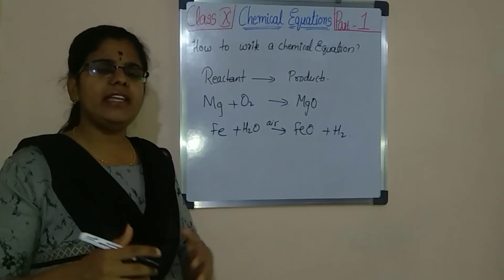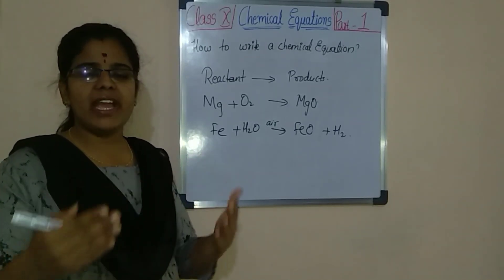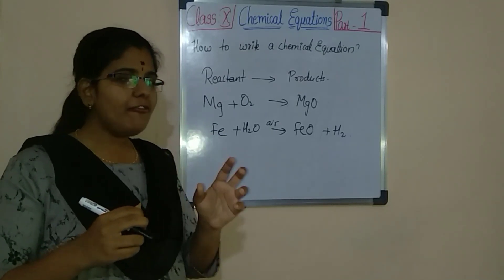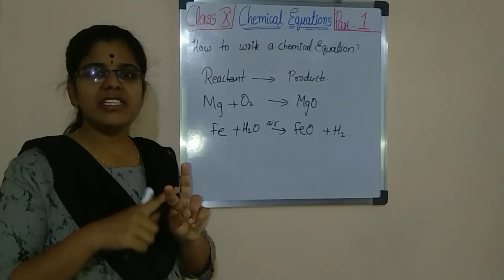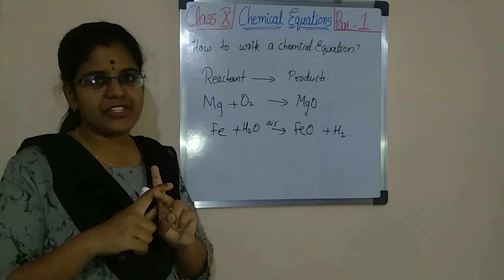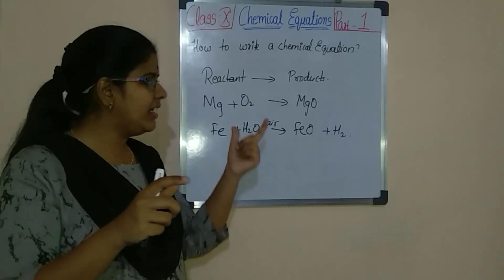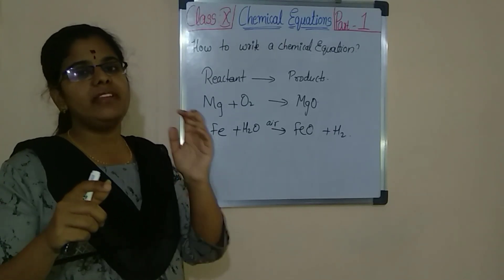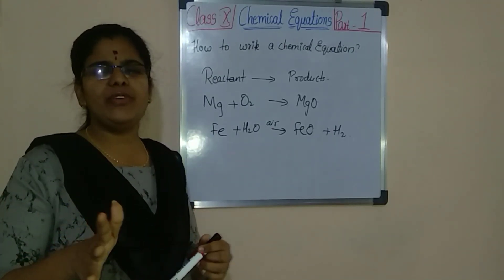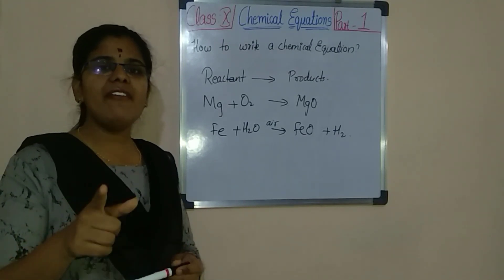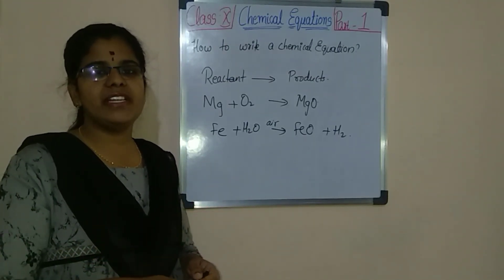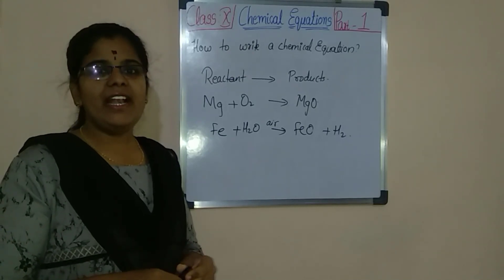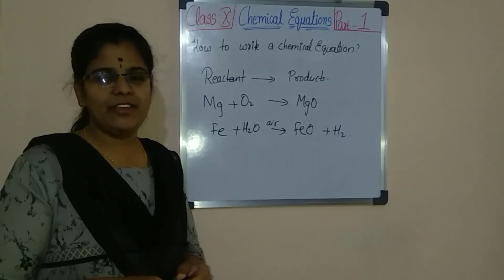So like this, we will be learning about many kinds of reactions in our further videos. I have given two examples — photosynthesis and the quicklime reaction. If you have understood this topic, write the two equations and comment in the comment section. If you have any doubt, please comment. Do remember to answer my question, and till then, keep observing and keep learning. Thank you.